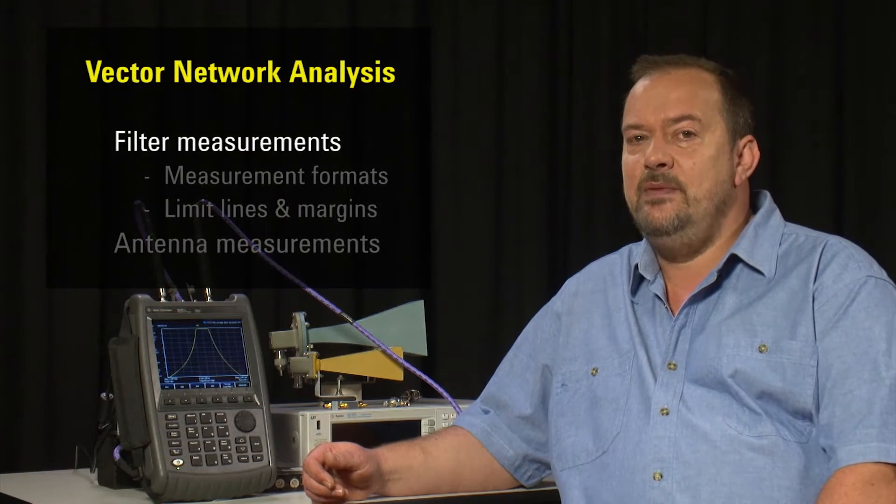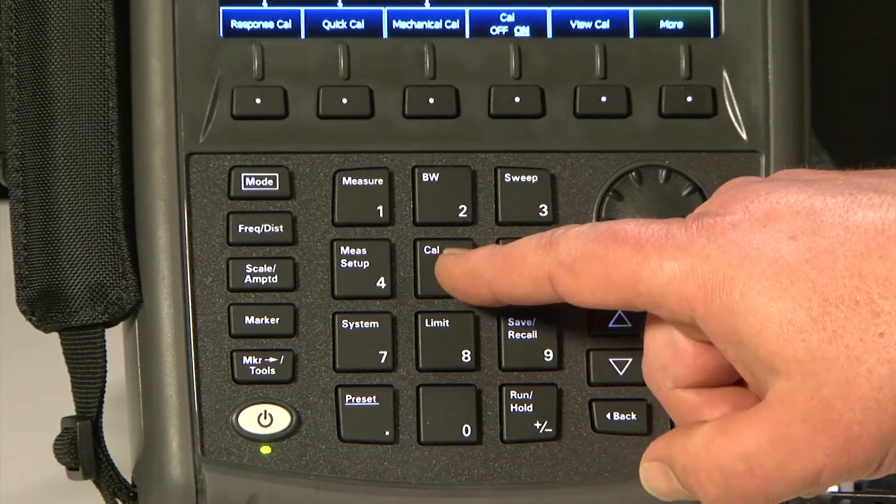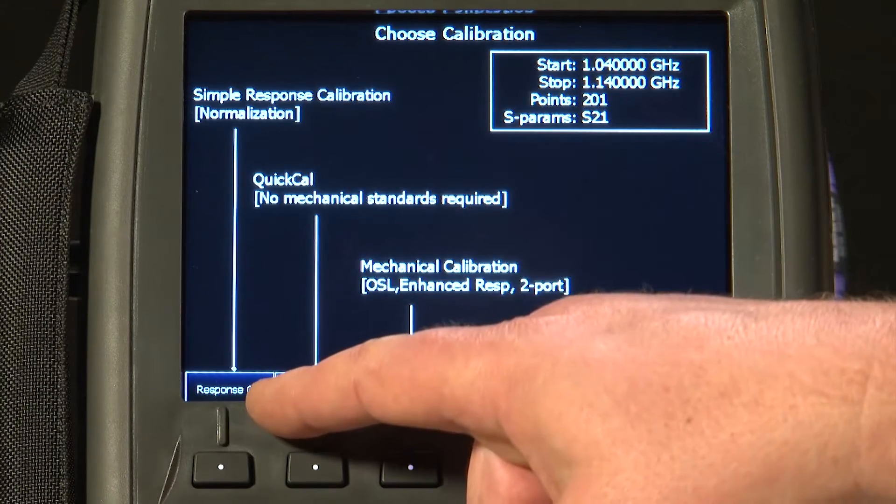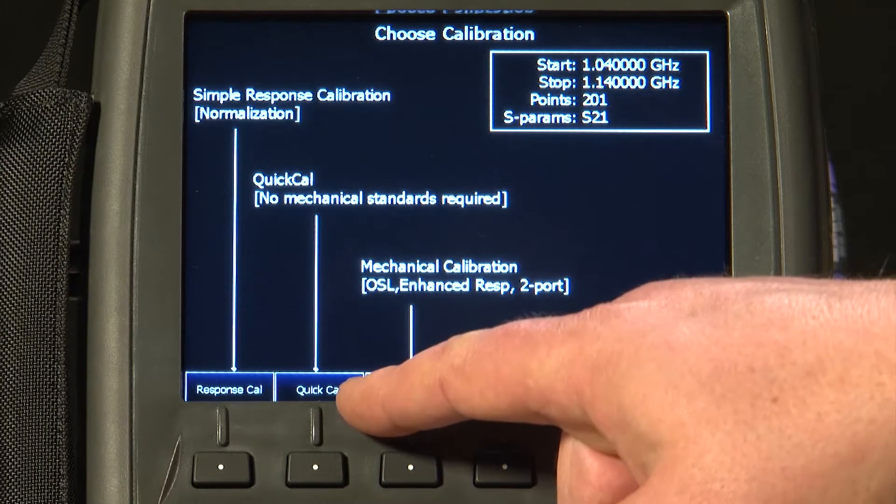Let us start by sweeping this tunable filter I have here. If I press the Cal button, you will see we have three calibration options: the Simple Response Calibration or Normalization, the Quick Cal where we do not need any calibration kit at all,